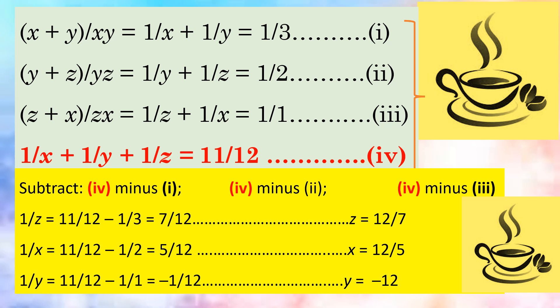Similarly, from the sum of 1 by x plus 1 by y plus 1 by z, subtract the value of 1 by y plus 1 by z, and we get the value of 1 by x.